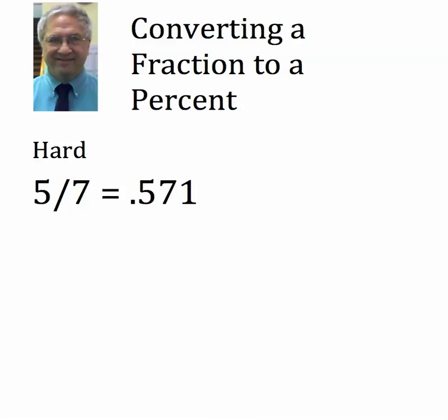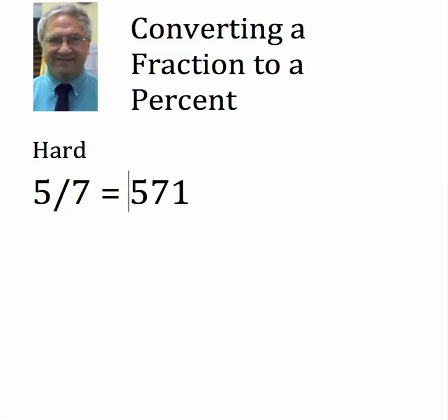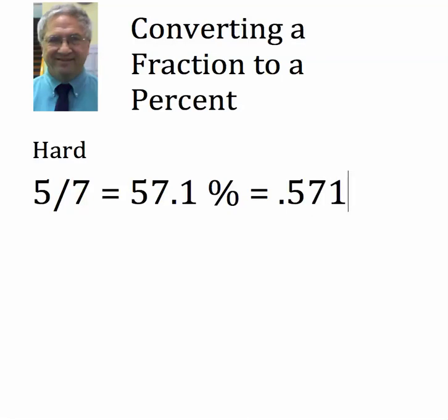Five-sevenths equals that as a decimal — you can round it if you want. To change that decimal to a percent, you pick up the decimal point and move it two to the right, and now you say it's equal to 57.1%. You want to get into your head that percents and decimals are two ways of saying the same thing: 0.571 is the same as 57.1%, and that's the same as five-sevenths. Hope that helped.